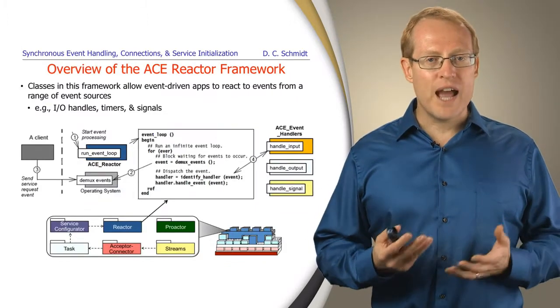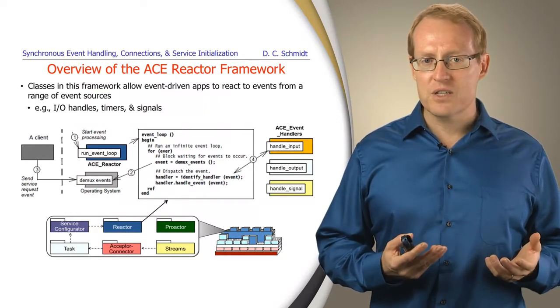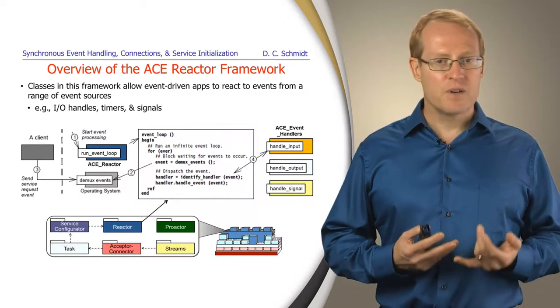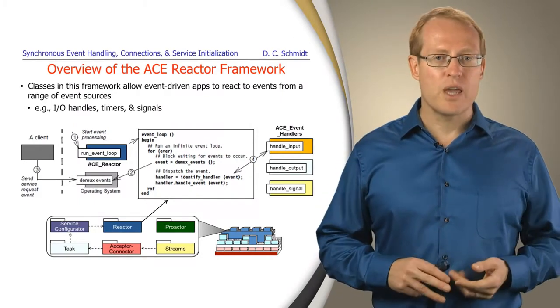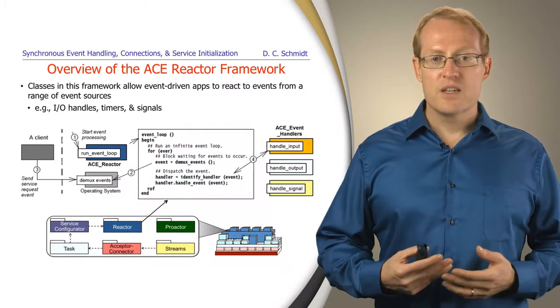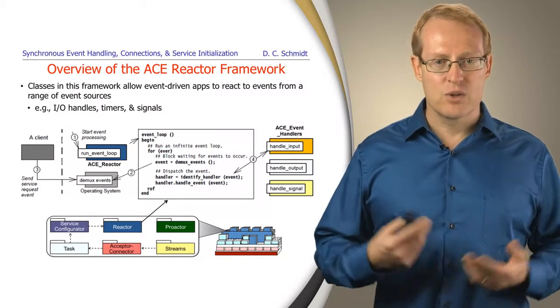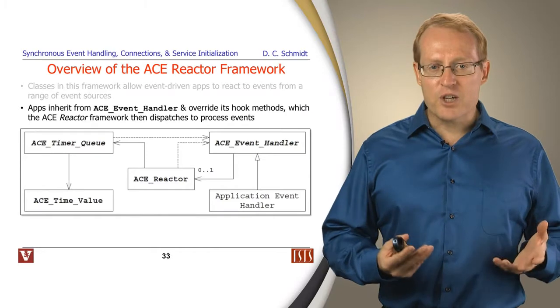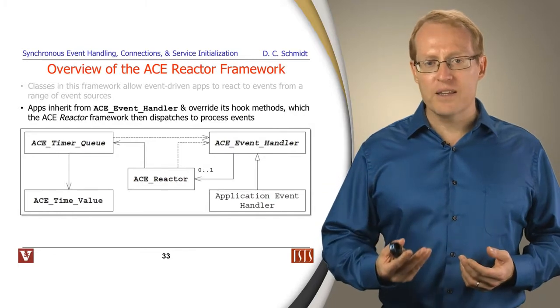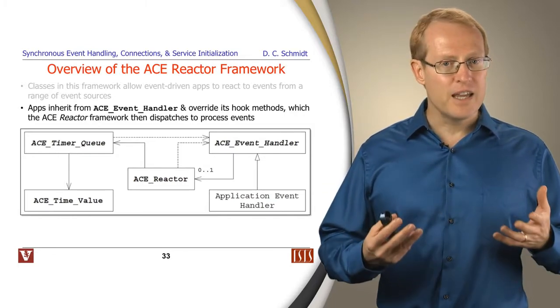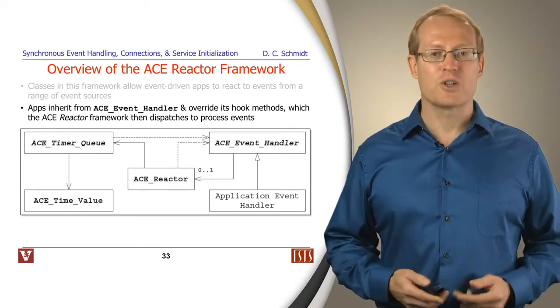So the ACE Reactor Framework provides a set of classes that allow event-driven applications to react to events from a range of different sources of events, different kinds of I.O. events, sockets, files, terminals, local interprocess communication, and so on, time-based events, signals, anything that is event-oriented you can typically connect together in a common interface through a framework that we use for the reactor. Applications typically inherit from something called ACE Event Handler, which is a base class, and they override the hook methods of this base class, and then they fill in various service or application-specific processing behavior that can leverage the reusable infrastructure for eventing.